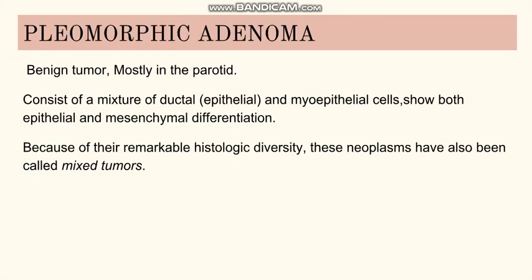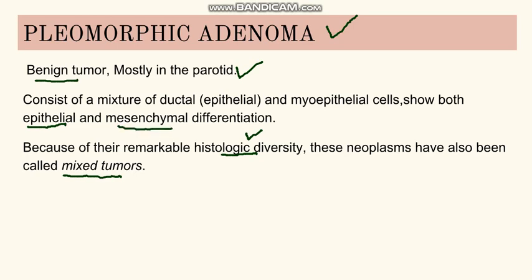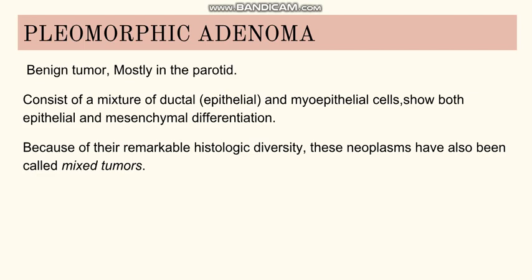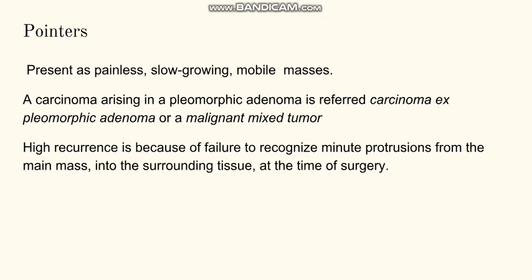Now discussing a very important tumour: pleomorphic adenoma, which is a separate topic in itself. This is mostly a benign tumour and is mostly found in the parotid. It is also known as a mixed tumour because it has remarkable histological diversity — a mixture of both epithelial differentiation and mesenchymal differentiation. In the histology, epithelial cells and myoepithelial cells are both present, hence it is called a mixed tumour. It mostly presents as a painless, slow-growing, mobile mass.